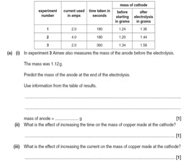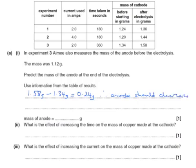In experiment three, Amy also measures the mass of the anode before the electrolysis. The mass was 1.12 grams. Predict the mass of the anode at the end of the electrolysis. In experiment three, the mass of the cathode has increased by 1.58 grams minus 1.34 grams, which is 0.24 grams. When using copper electrodes, the cathode increases in mass but the anode decreases in mass by the same amount. Therefore the anode mass would be 1.12 grams minus 0.24 grams, which comes to 0.88 grams.